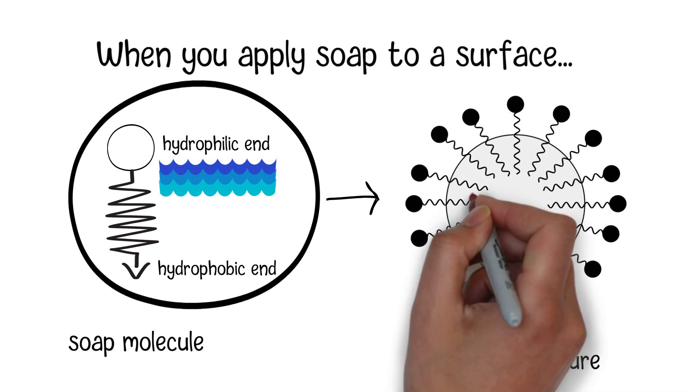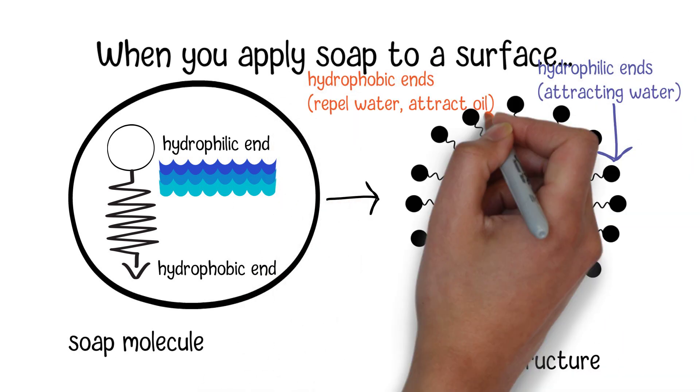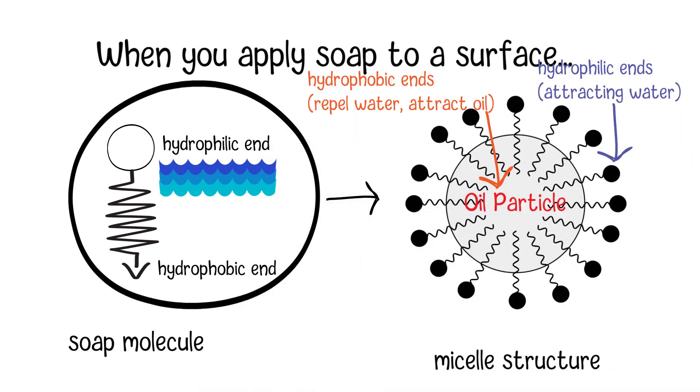The hydrophobic ends of the soap molecules embed themselves into oils, grease, and dirt, suspending them in the micelles. This allows the soapy water to surround and encapsulate these hydrophobic substances.